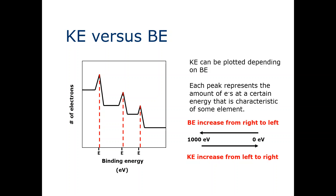Normally whenever you have XPS results, you will have a typical spectrum as you can see here in this figure. Here we have kinetic energy versus binding energy. We have the number of electrons plotted versus the binding energy. Each peak in the spectrum represents the amount of electrons at a certain energy that is characteristic of some element.